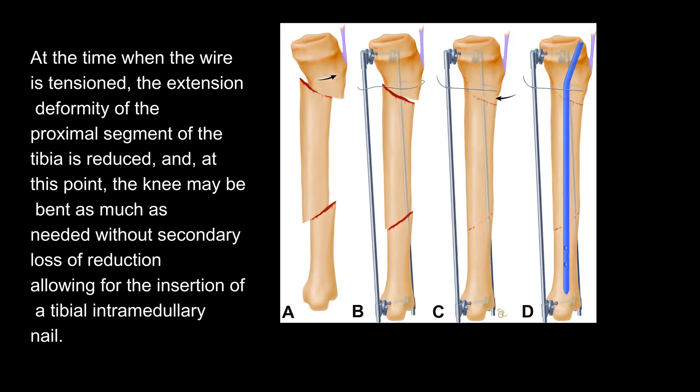At the time when the wire is tensioned, the extension deformity of the proximal segment of the tibia is reduced, and at this point the knee may be bent as much as needed without secondary loss of reduction, allowing for the insertion of a tibial intramedullary nail.